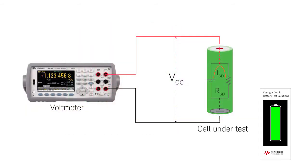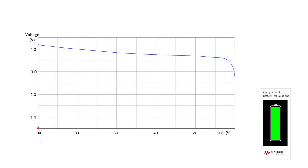Traditionally, self-discharge is evaluated by measuring the decrease in a cell's open circuit voltage, or OCV, over time. A high-accuracy, high-resolution voltmeter is required to measure the cell's voltage loss over an extended period. The amount the OCV changes over time is an indicator of how much the cell's state of charge, or SOC, changes due to self-discharge.